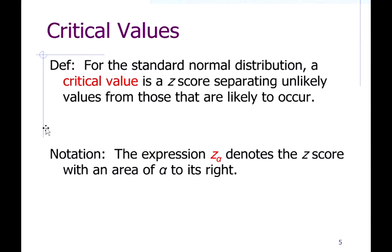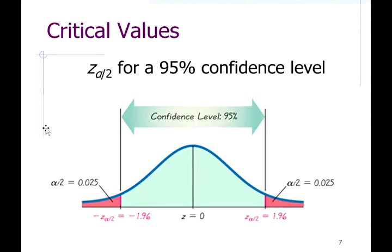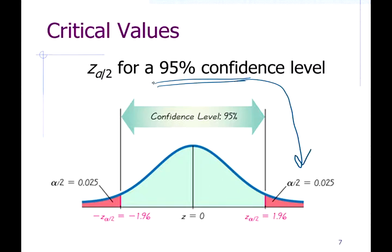These critical values are calculated based on what's called the confidence level of our estimate. When we make these confidence interval estimates of population parameters — extending beyond a simple point estimate — that confidence level is the area in the middle of the normal distribution graph. If you're 95% confident in your estimate, then there's a 5% chance you're wrong, split half for overestimate and half for underestimate.